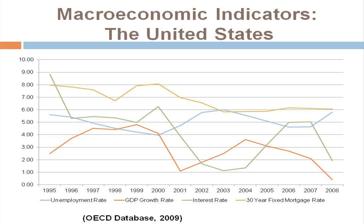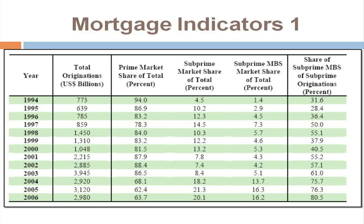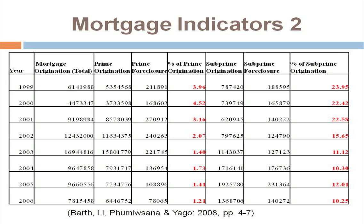Another indicator is the unemployment rate, which was declining until 2006 and 2007. The amount of mortgage originations steadily increased to almost three trillion dollars by 2006, but we can see a slowing down, and in 2006 it actually declined a little. The share of subprime mortgages increased, and mortgage-backed securities — which were the main business line for investment banks — steadily increased.